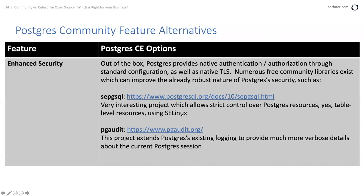SELinux got an unfair start — a lot of people got in the habit of turning it off — but there are now good reasons to turn it back on with a lot of good tooling that makes it easier to deal with. SE-PostgreSQL allows us to extend SELinux semantics and labeling into table-level resources in Postgres, helping unify host security. Also worth calling out is PG Audit — more verbose details than you get from a standard Postgres session.